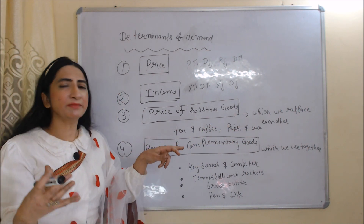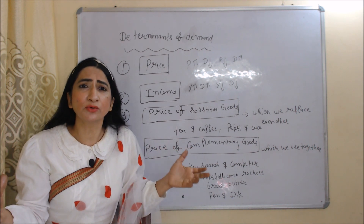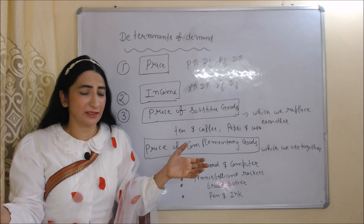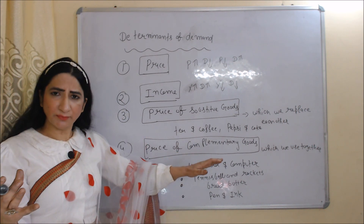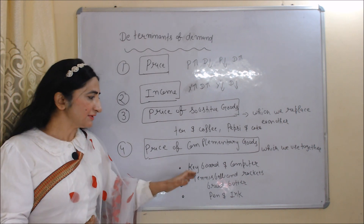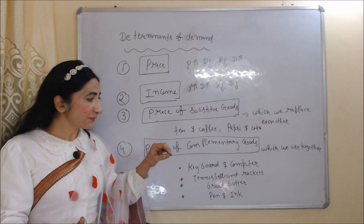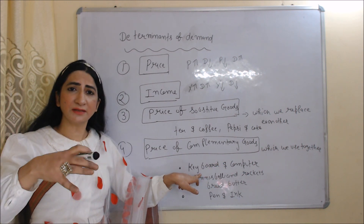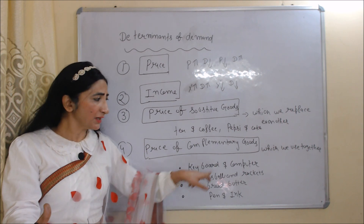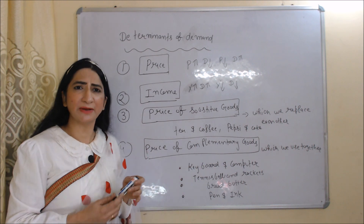Next is price of complementary goods. Complementary goods are those goods which we use together. For example, keyboard and computer, tennis ball and rackets, bread and butter, pen and ink. If price of computer will increase, it will affect the demand of keyboard. Similarly, if price of tennis ball will increase, it will affect the demand of racket. Same in the case of bread and butter and pen and ink.